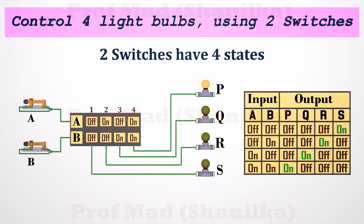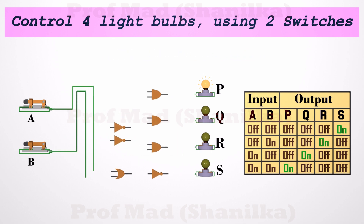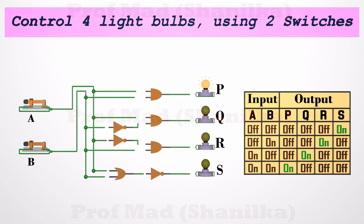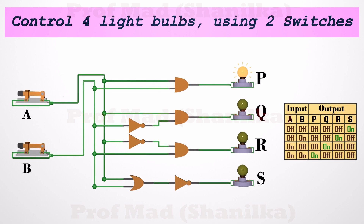How can we develop this system? We can use logic gates. To build this system we need three AND gates, three NOT gates, and an OR gate. Let's see how this works.